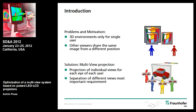In a collaborative design review, like you see in the picture, it is very important that every person who looks at the model sees the correct perspective from their position so that they can talk about the correct things. We need a projection for four people, so we need eight images to have eight stereo images. And the most important thing is to separate these individual images.